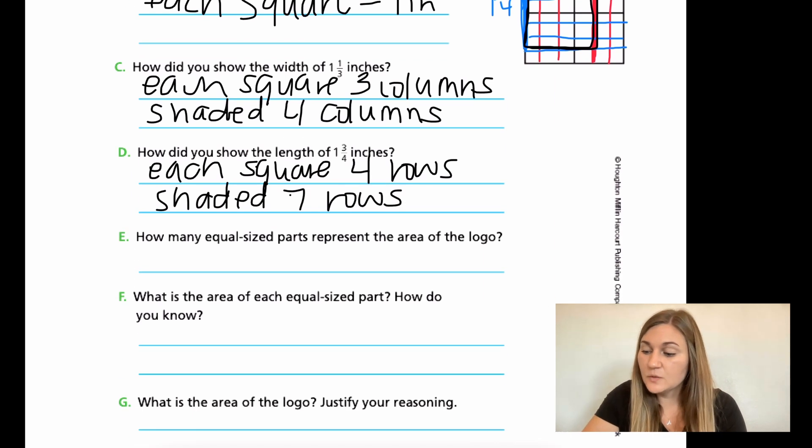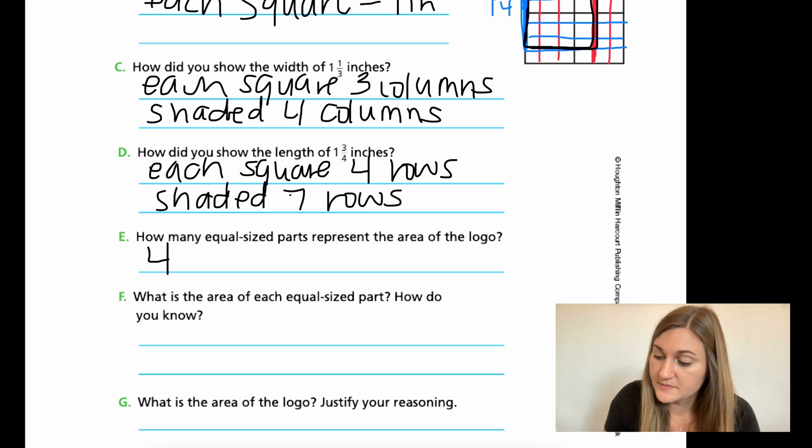Alright, for E, how many equal-sized parts represent the area of the logo? Well, I know if I shaded in 4 columns and 7 rows, I need to multiply those to find the area of the logo. And 4 times 7 is 28. So I have 28 equal-sized pieces up above in the blue and the red.